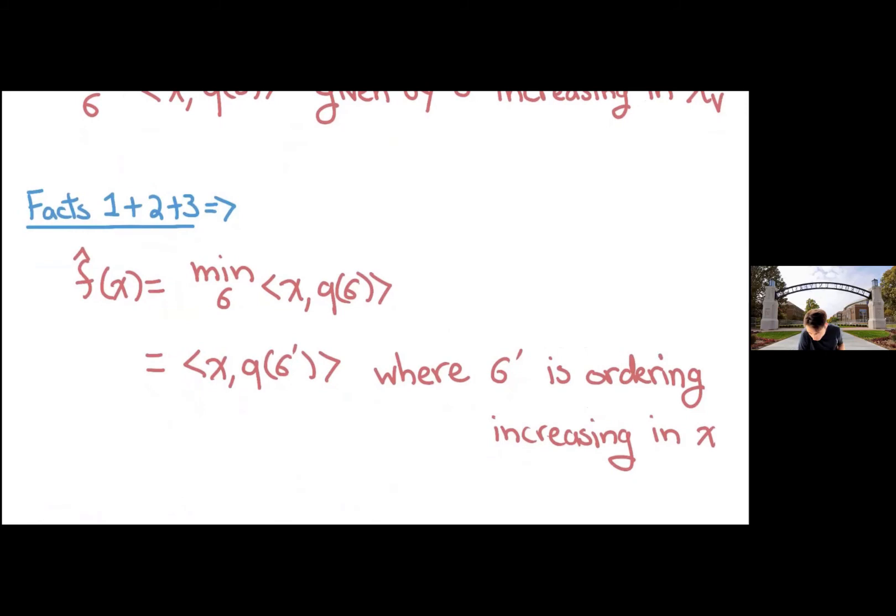So when we put these three known facts together, we get the following useful version: that the Lovász extension is minimizing over all orderings, x times this vector q induced by the orderings induced to some extent by peeling.